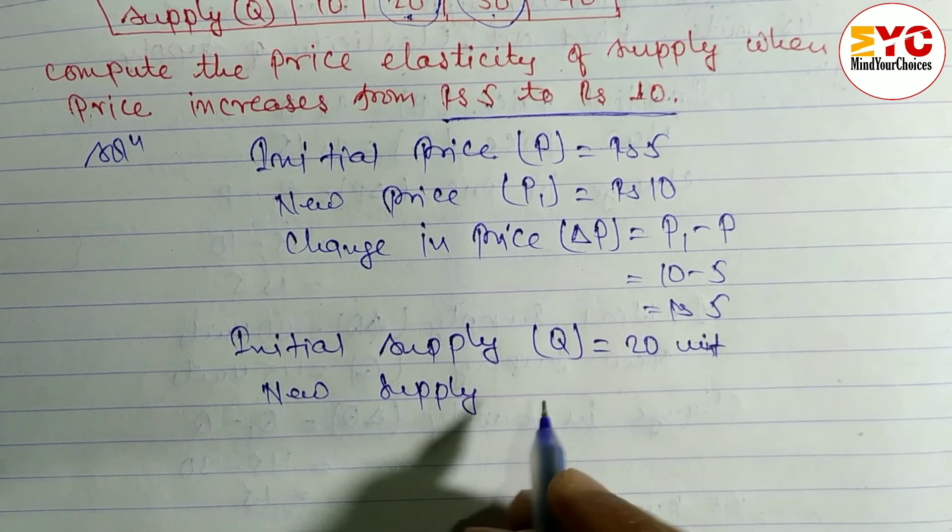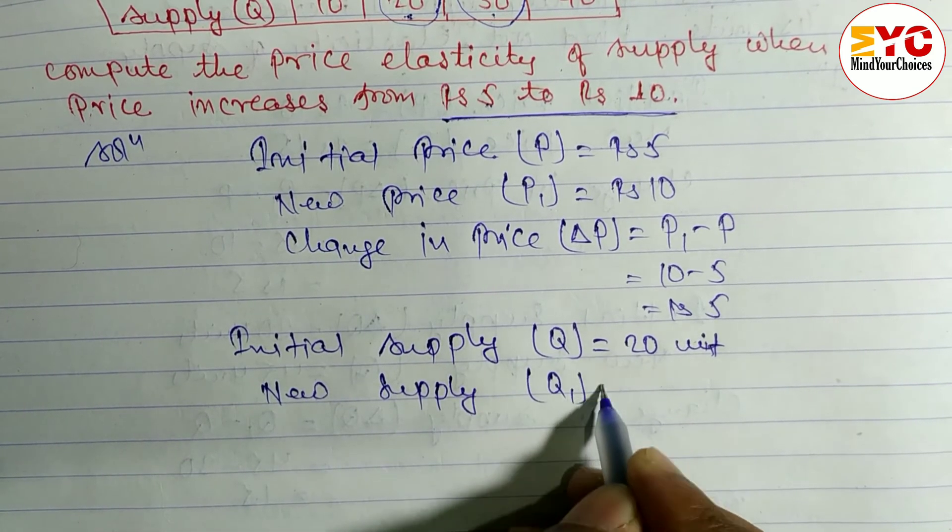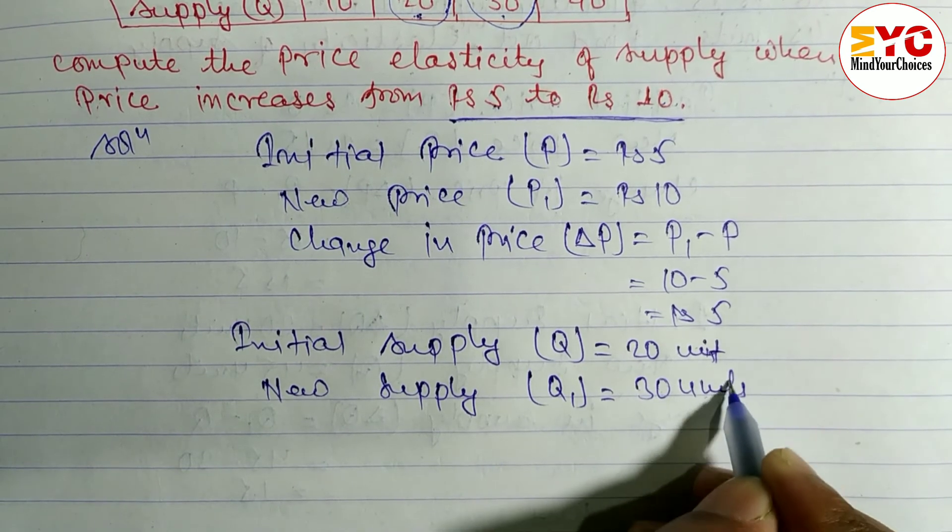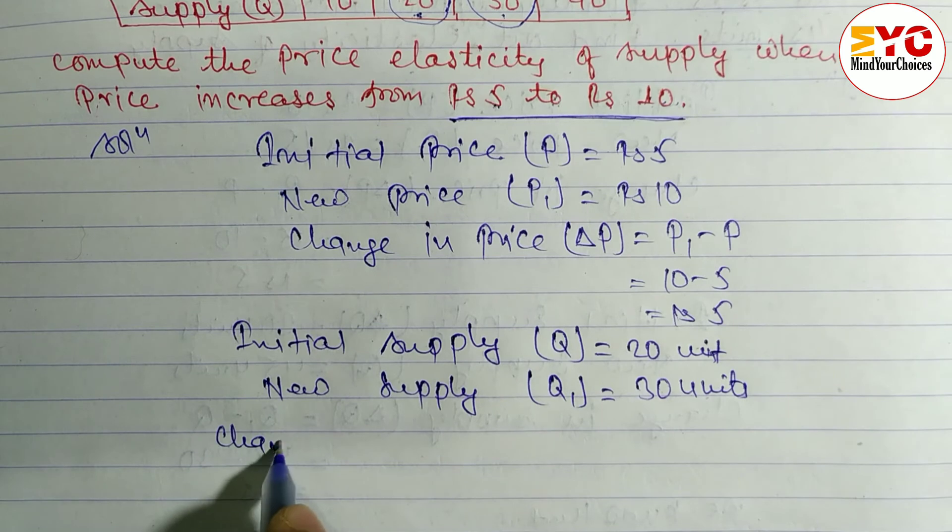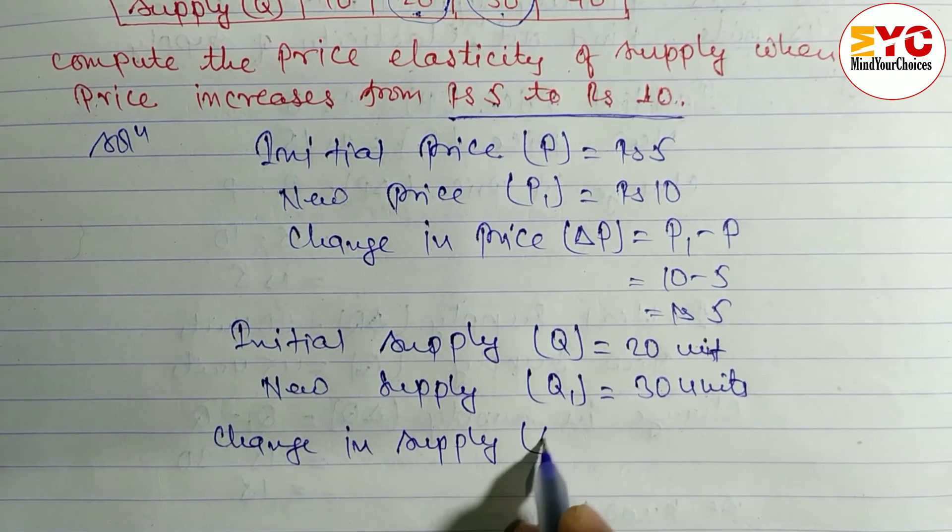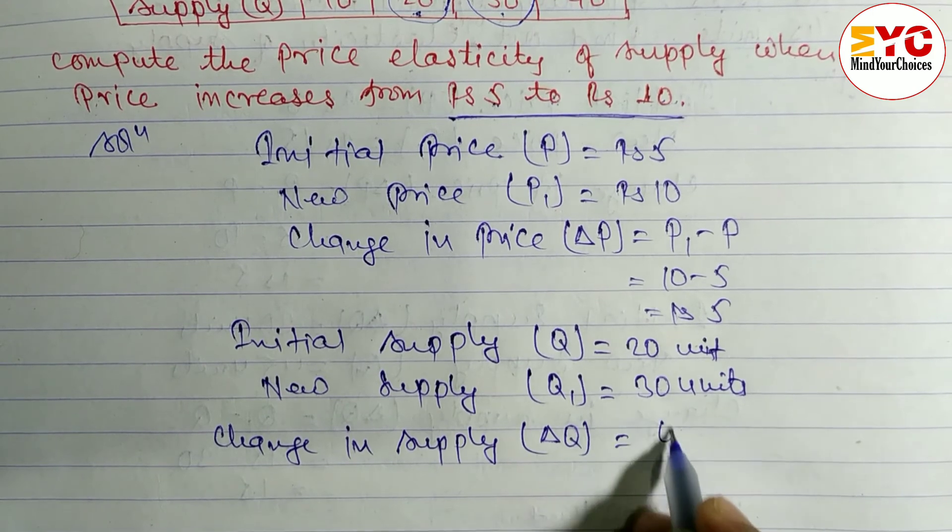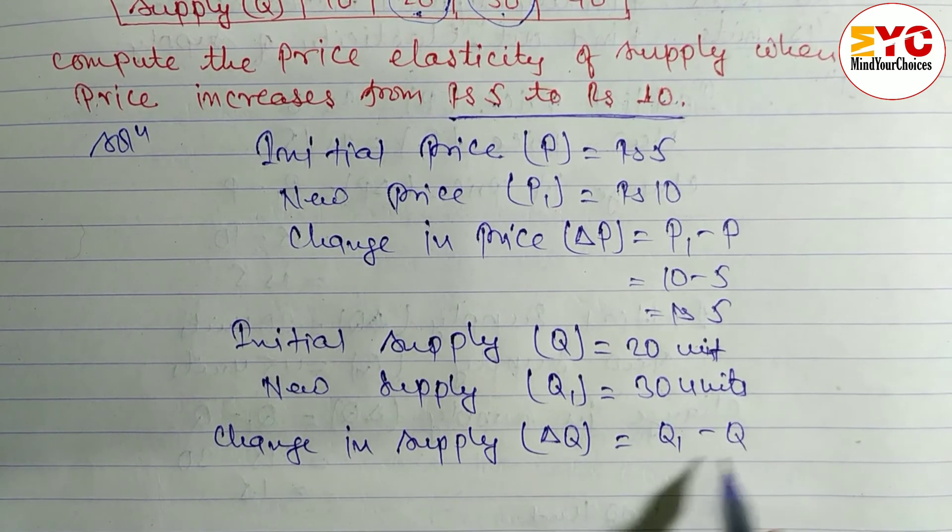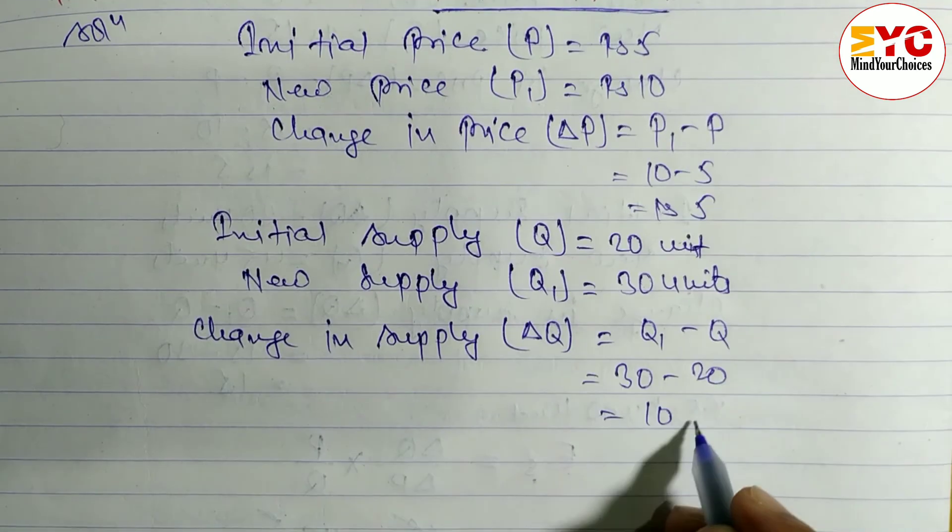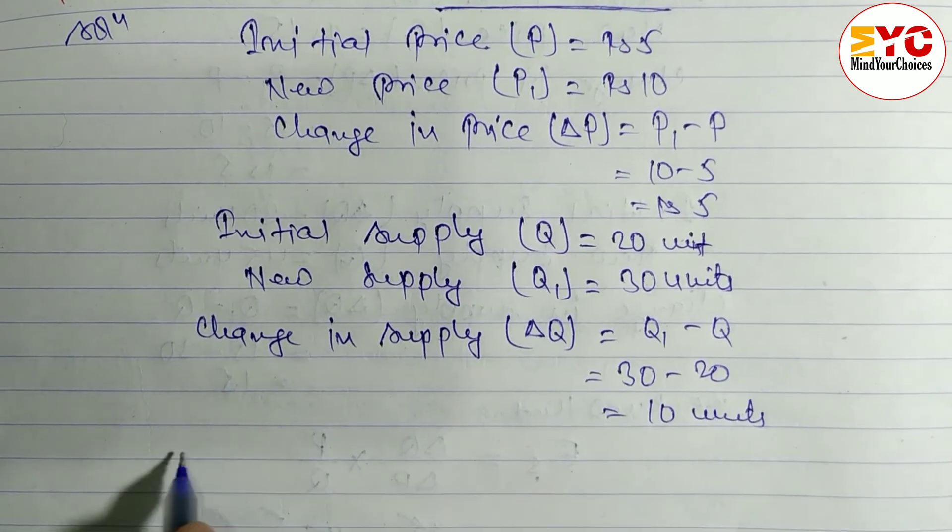And after that, we have to find out change in supply, which is denoted by ΔQ. Formula is Q₁ - Q. 30 - 20 is equal to 10 units.